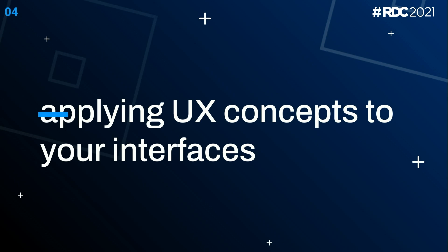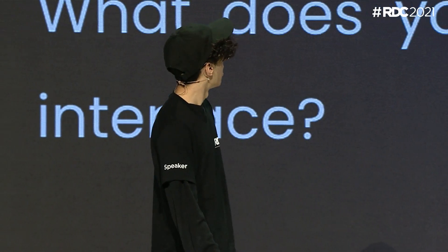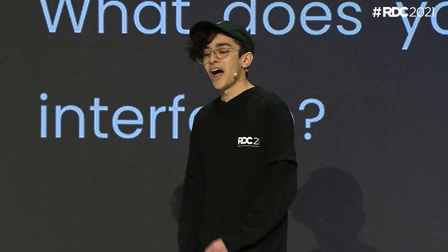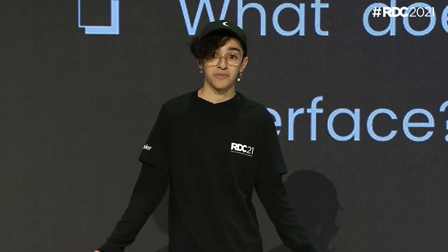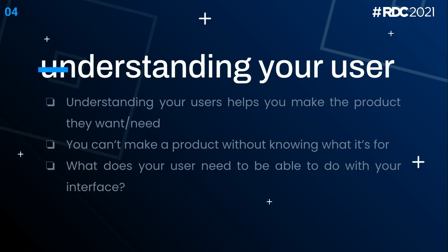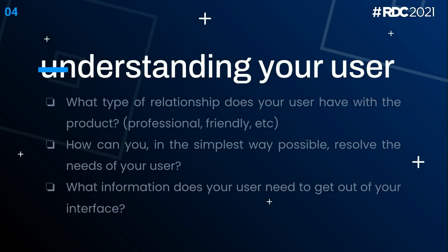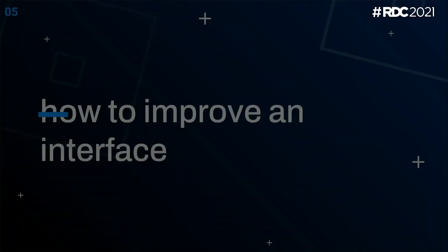Let's apply some of these UX concepts to an interface, but first we need to understand our user. How are you supposed to build a house or a car if you don't have blueprints or a plan? You could wing it, but later you'll run into problems. It's a good idea to have a fundamental understanding of your user and who you're making the product for. Asking yourself probing questions is a super effective way of doing this — it brings problems out before they make it into your end product.